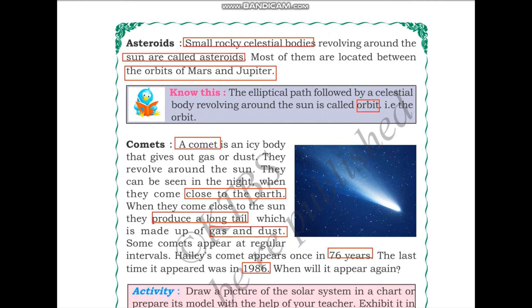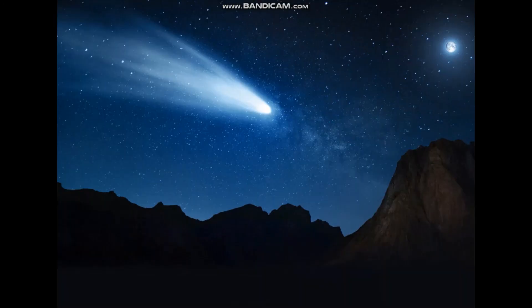Let me show you a picture of a comet. This is an image of a comet. Observe how it has a long tail. This is the end of this lesson. I will see you all in the next lesson.